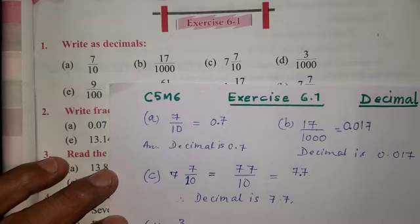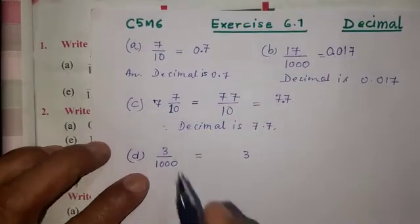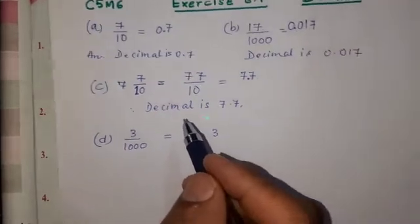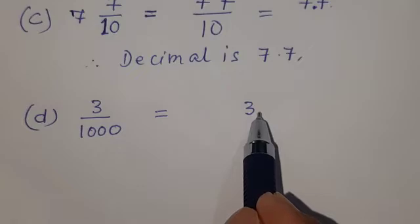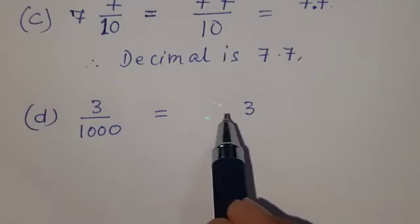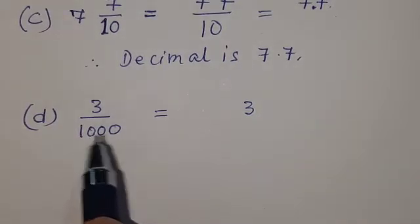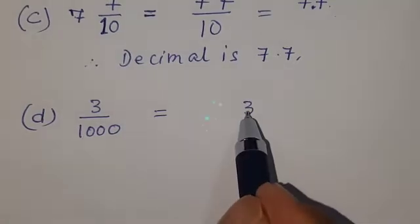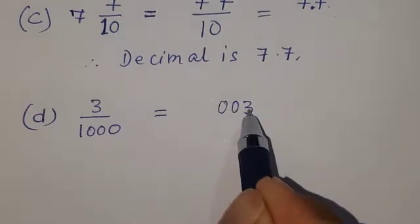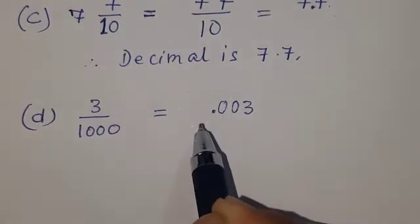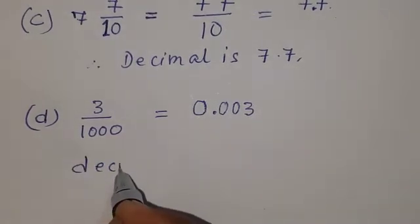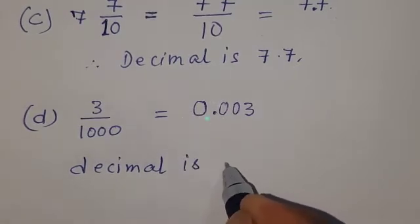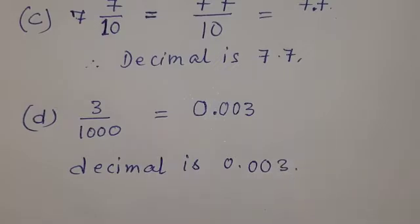Three by one thousand. We need to give the answer. One thousand has three zeros — one thousand, two, three digits after the decimal point. The decimal is 0.003. Yes sir, the right answer is 0.003.